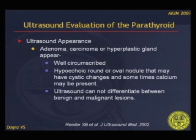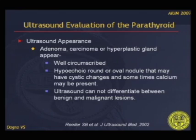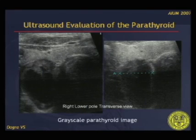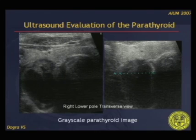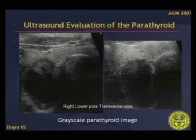The ultrasound appearance of parathyroid adenoma, carcinoma, or hyperplastic parathyroid gland is similar on ultrasound, and ultrasound cannot differentiate between benign and malignant lesions. This is an example in grayscale showing a right lower pole parathyroid adenoma, predominantly hypoechoic in appearance.